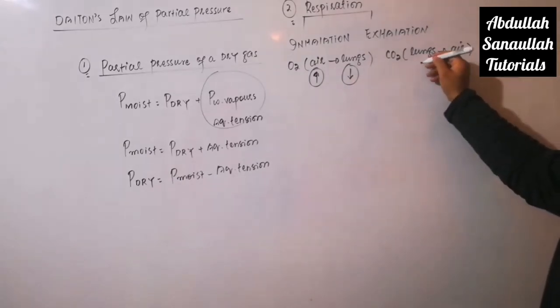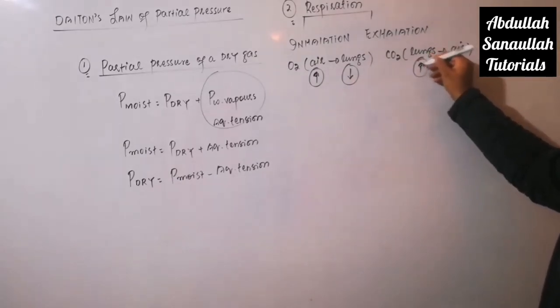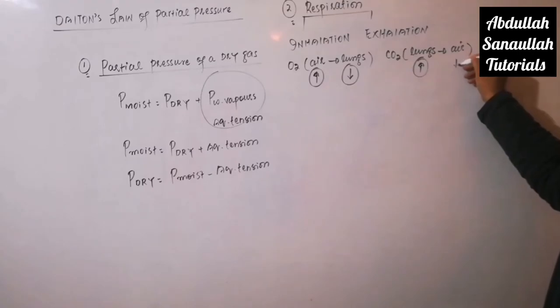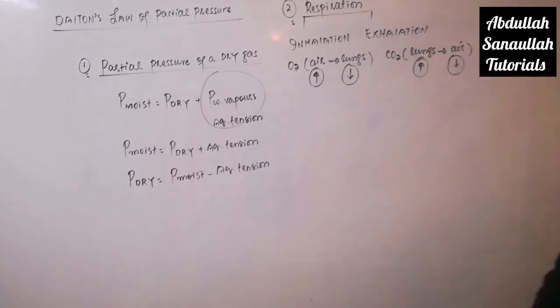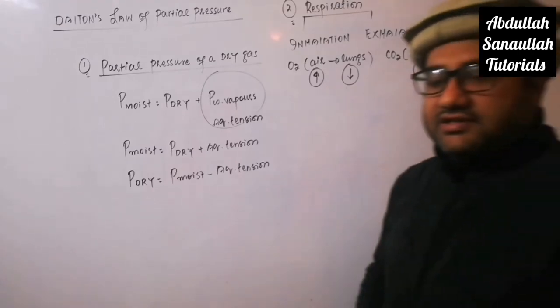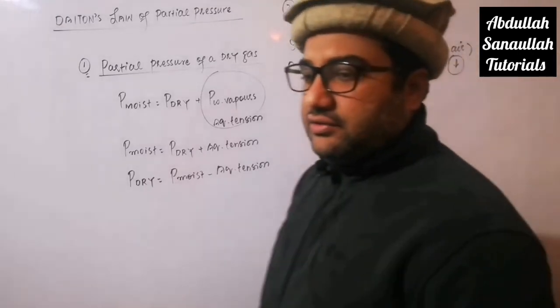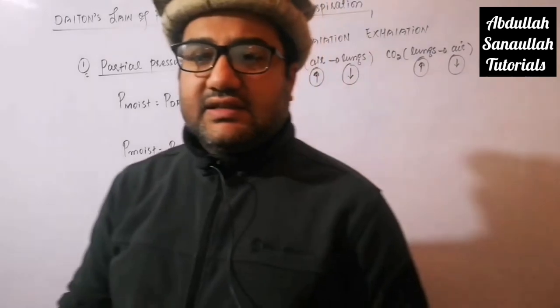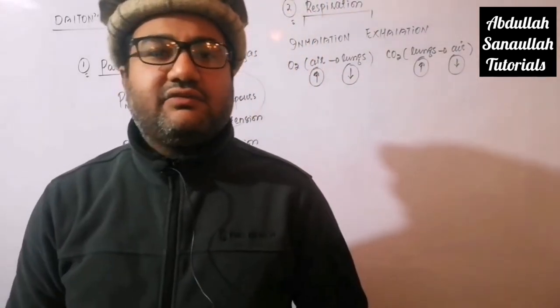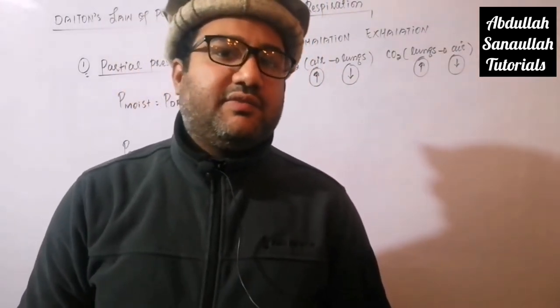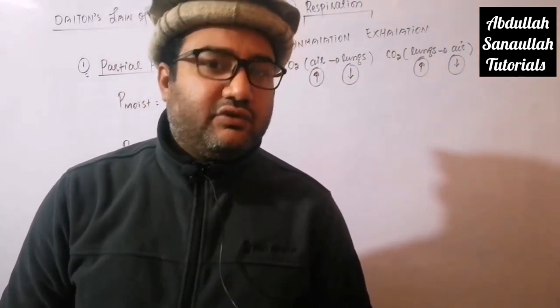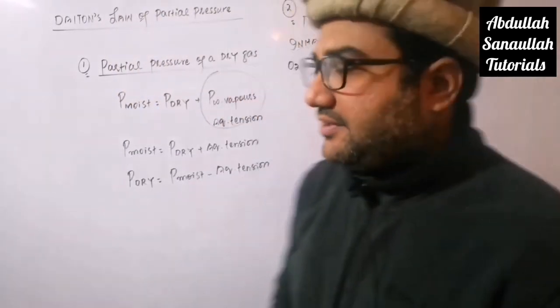The partial pressure of CO₂ in lungs is greater than that in the air. So due to this difference in partial pressure, CO₂ is easily exhaled from the area of high partial pressure to the area of low partial pressure.